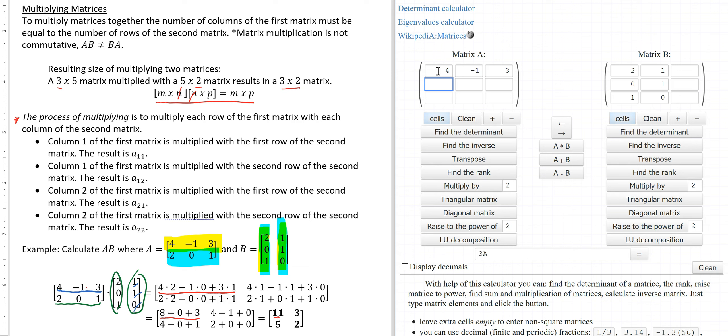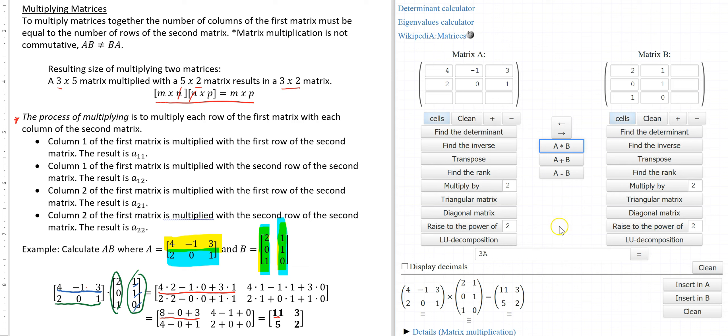And then I already had matrix B typed in. I can use A times B on technology and it gives me the answer of 11, 3, 5, and 2.